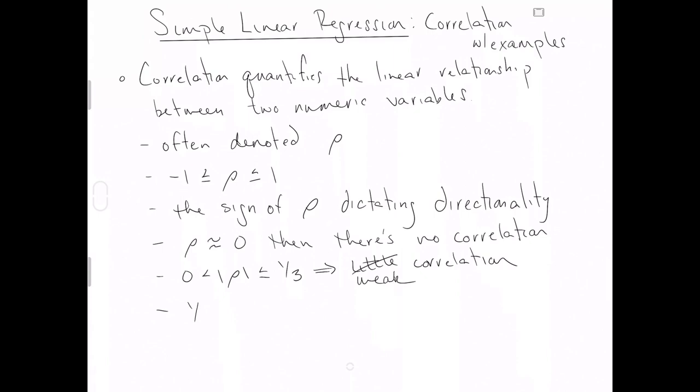On the other hand, if rho in absolute value is somewhere between 0.33 and 0.66, then we say moderate, that x and y are moderately correlated, or they have moderate correlation.